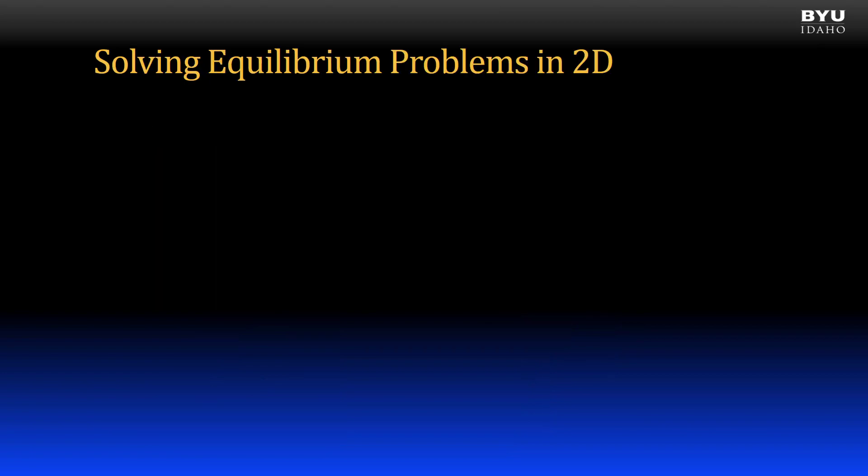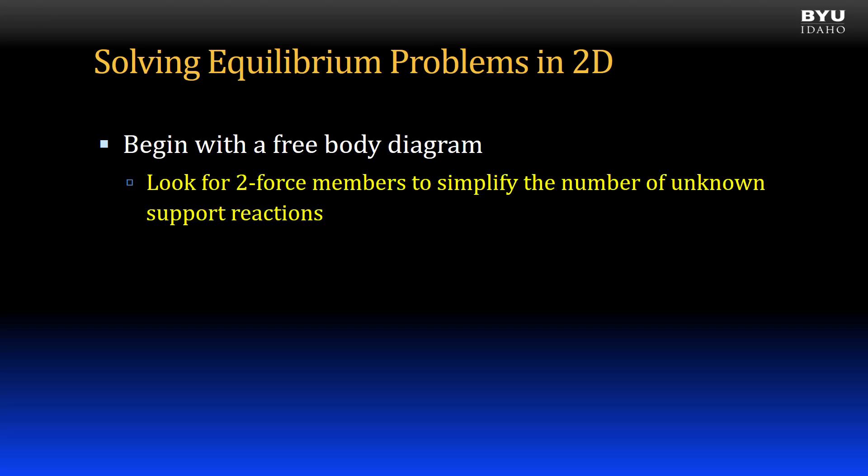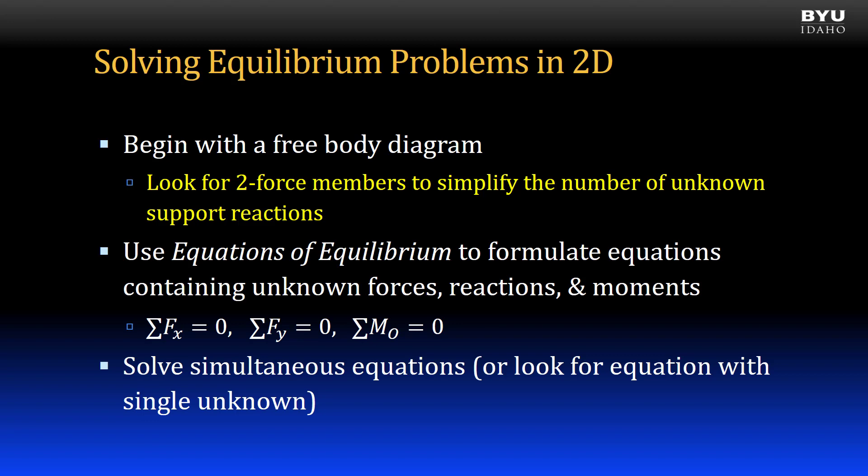Let's review our problem-solving approach for rigid bodies in equilibrium in two dimensions. As always, we'll start with a free body diagram. As we construct that diagram, we will look for two force members that simplify the number of unknown support reactions. Then we will apply our equations of equilibrium, being on the lookout for equations that have just a single unknown to give us a direct solution.